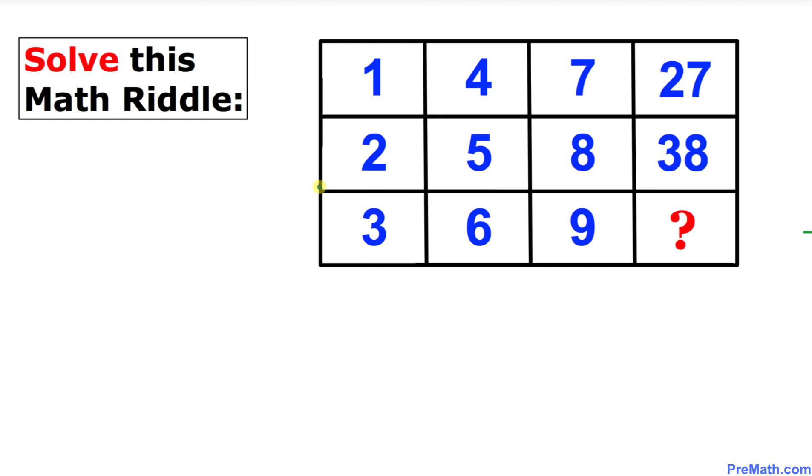Welcome to pre-math. In this video tutorial we are going to solve this given math riddle. As you can see in this table, here's the problem. We got numbers 1, 2, 3, 4, 5, 6, 7, 8, 9 on the left hand side and then we have been given 27, 38. So the question is, what is going to be the number at this place?